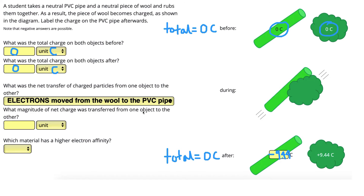What magnitude of net charge was transferred from one object to the other? Whatever charge was transferred is shown by the final charges, since they both had zero to start with. The wool gained 9.44 coulombs and the rod lost 9.44 coulombs, so the amount transferred was 9.44 coulombs. Here it just asks for the magnitude, so we don't need any positive or negative signs. Lastly, which material has a higher electron affinity? Electron affinity is the idea of a material that likes electrons and wants to gain them. Since the electrons moved from the wool to the PVC pipe, PVC must have a higher electron affinity. If wool had a higher electron affinity, the electrons would have gone from the rod to the wool instead, and we would have ended up with a negative charge on the wool and a positive charge on the rod.